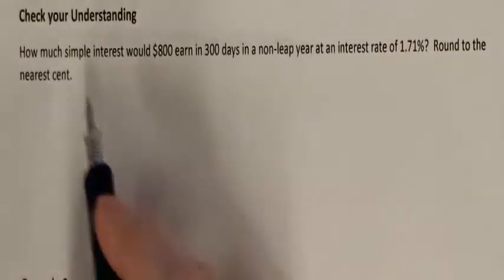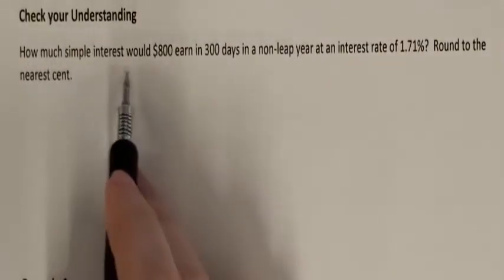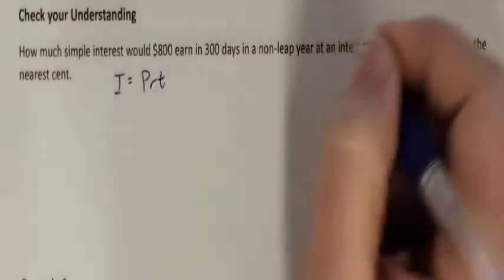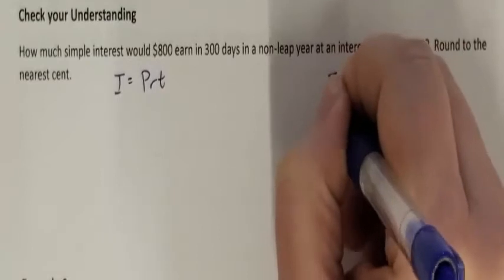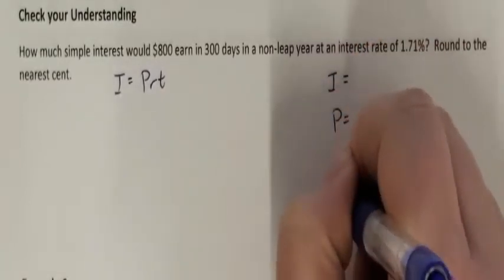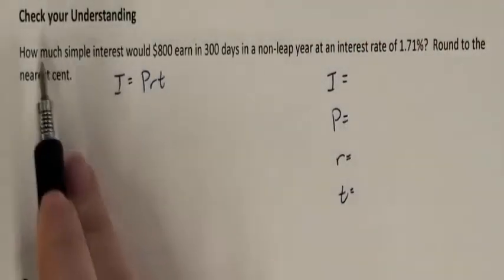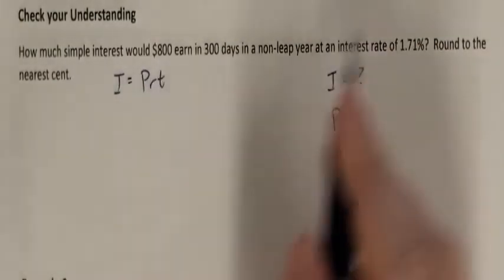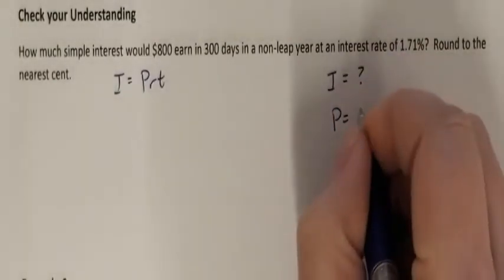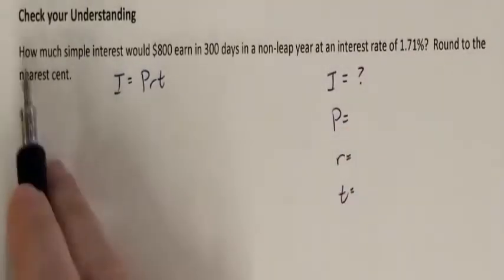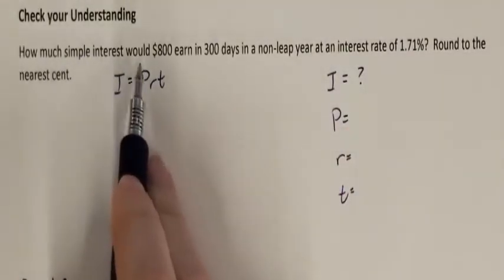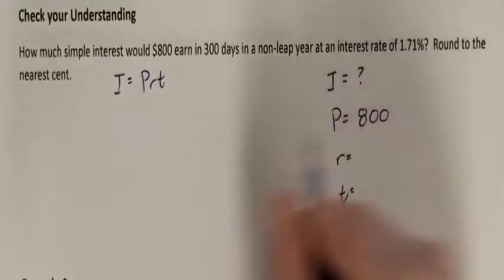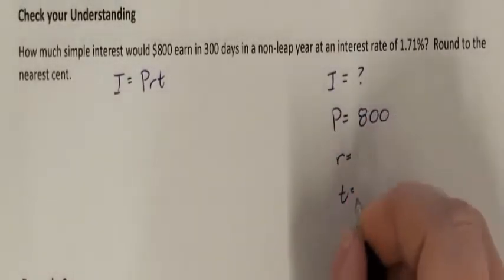Now let's check your understanding. How much simple interest would $800 earn? It sounds like I'm using the simple interest equation again, which means I need I, P, R, and T. I'm looking for I. The principal is $800, earned in 300 days.